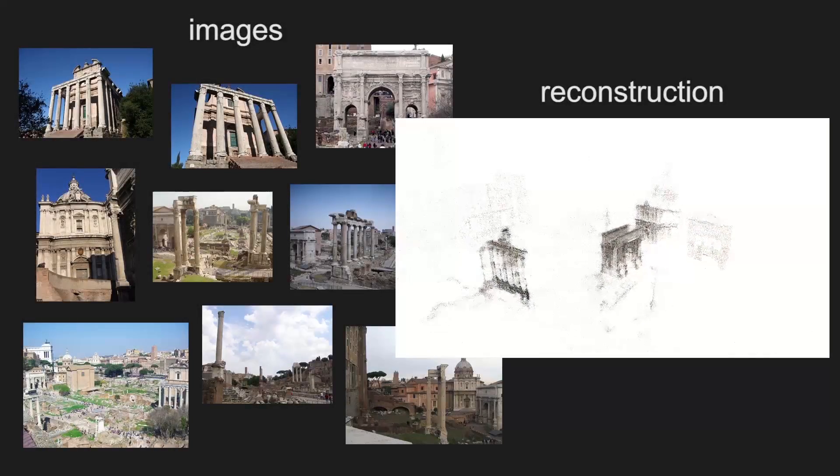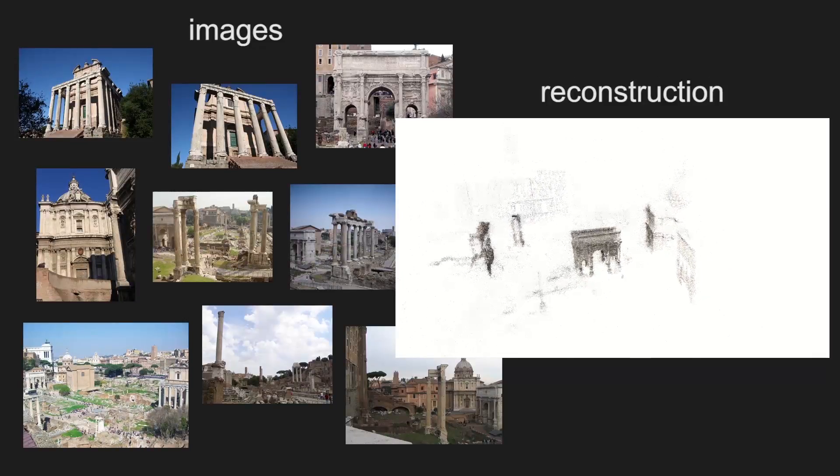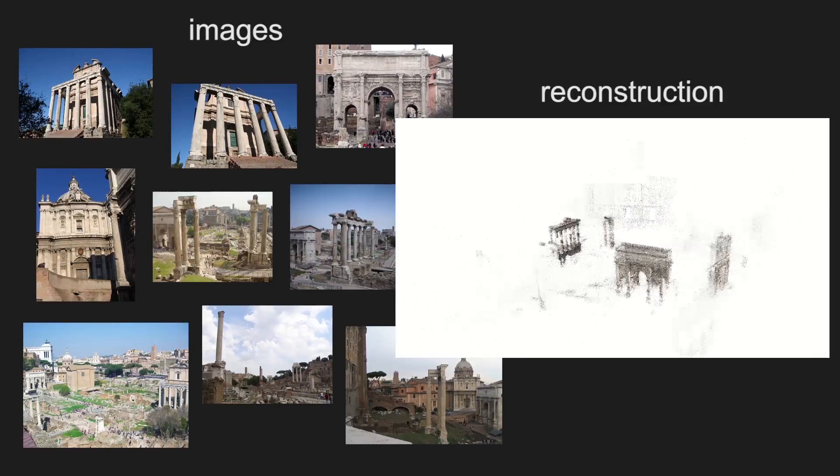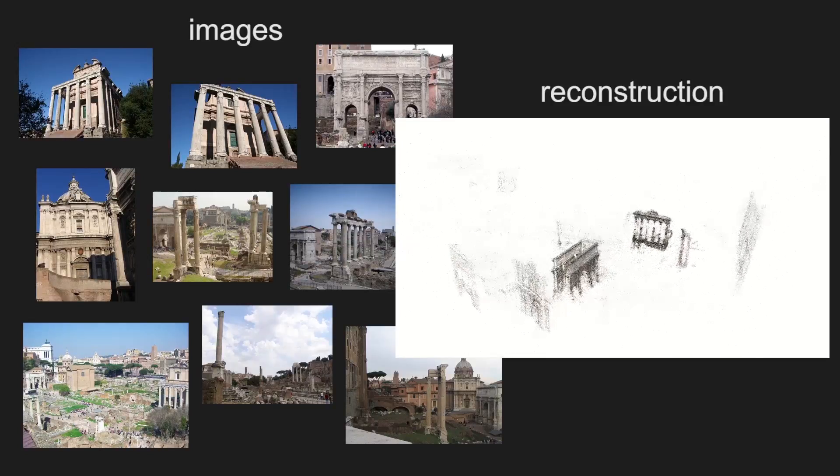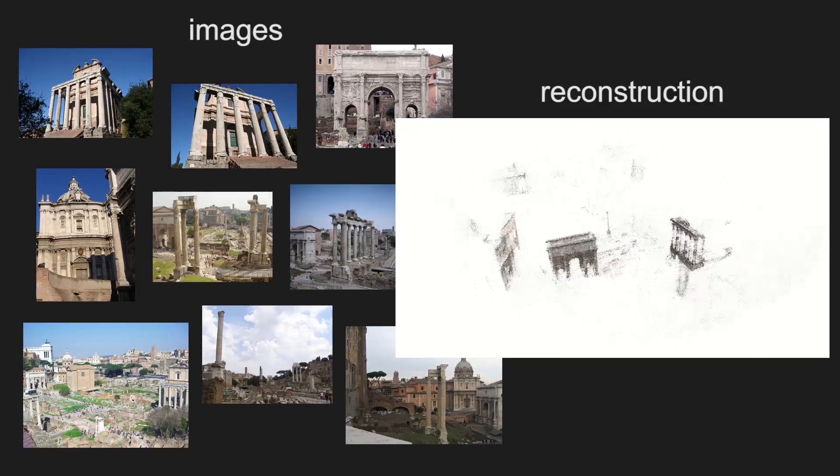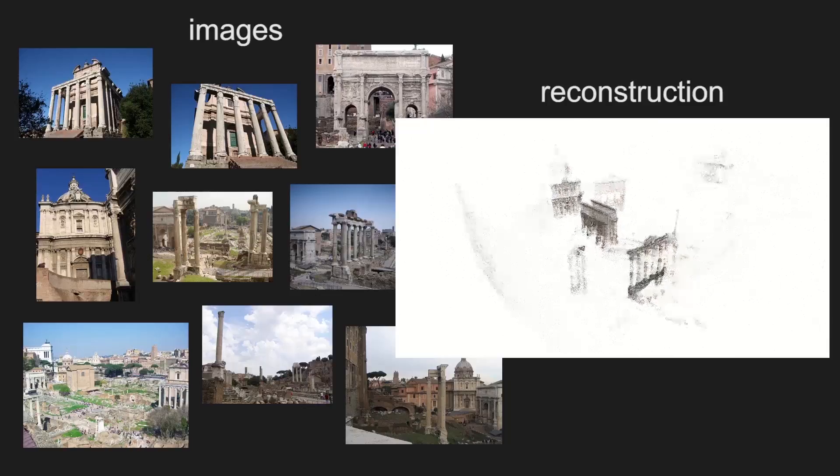Structure from motion algorithms are very powerful and can produce beautiful reconstructions from a collection of photographs of a scene. To do this, they must first compute correspondences between pairs of input images to determine if they view the same part of the scene.